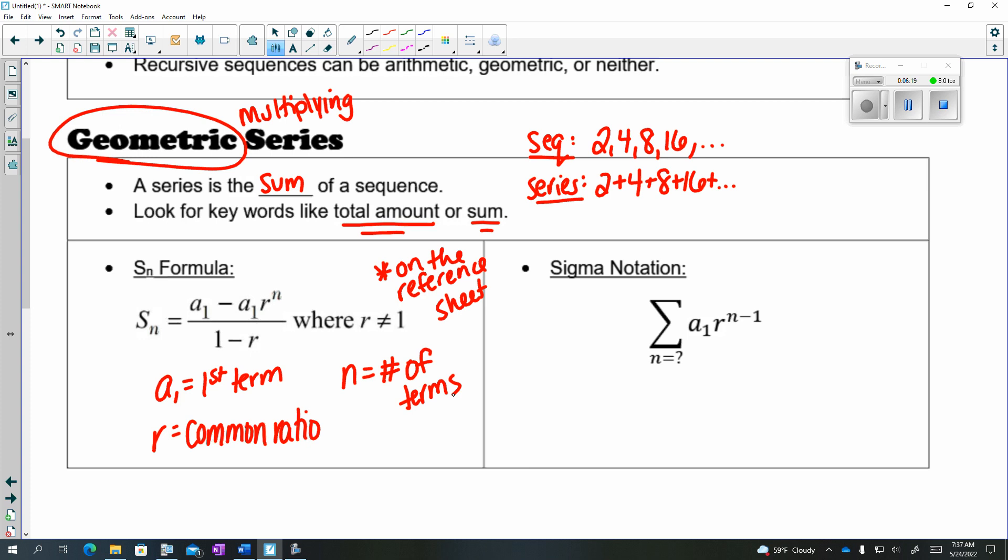Just in case the sigma notation does come up, this is how it's written. This funky-looking E is the sigma. It's a letter in the Greek alphabet. This part here is just your geometric sequence formula.